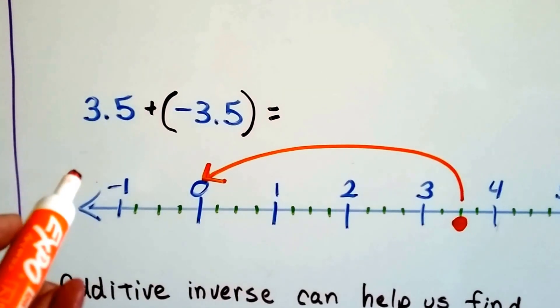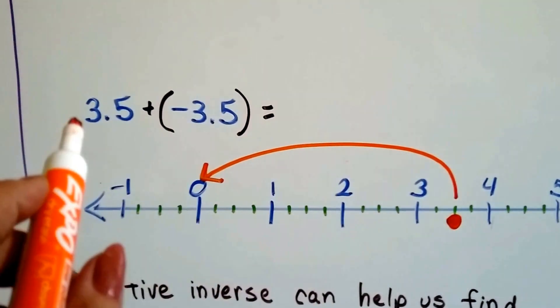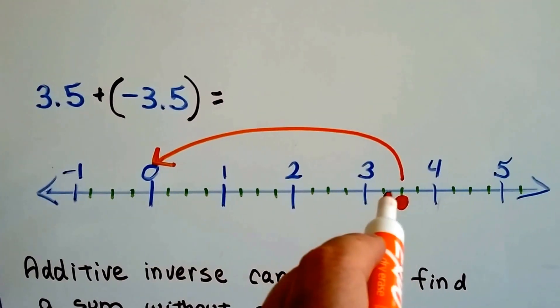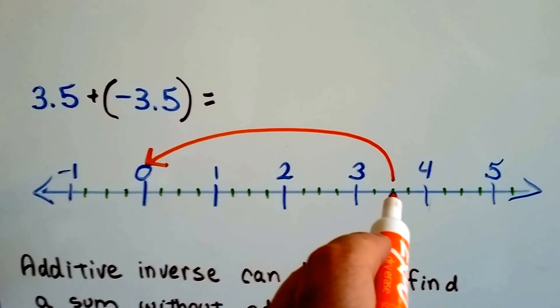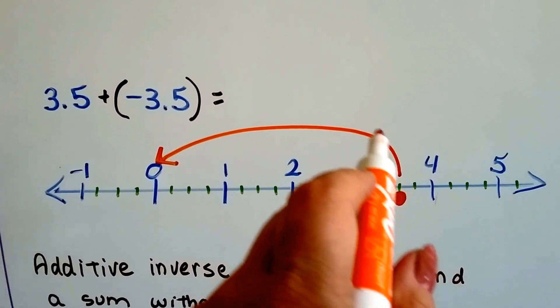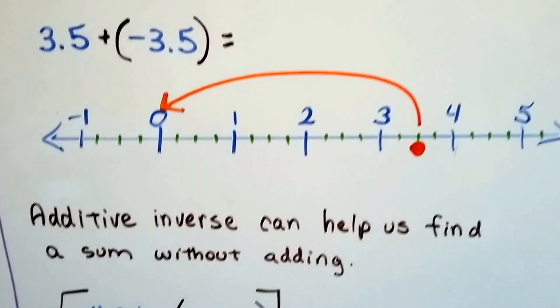What about in decimal form? So it says a positive 3.5 plus a negative 3.5. So here's zero. Here's the positive 3 and 1 half, 3.5. And it says to add a negative 3.5. So we're going to go this direction. That's going to put us right back at zero.